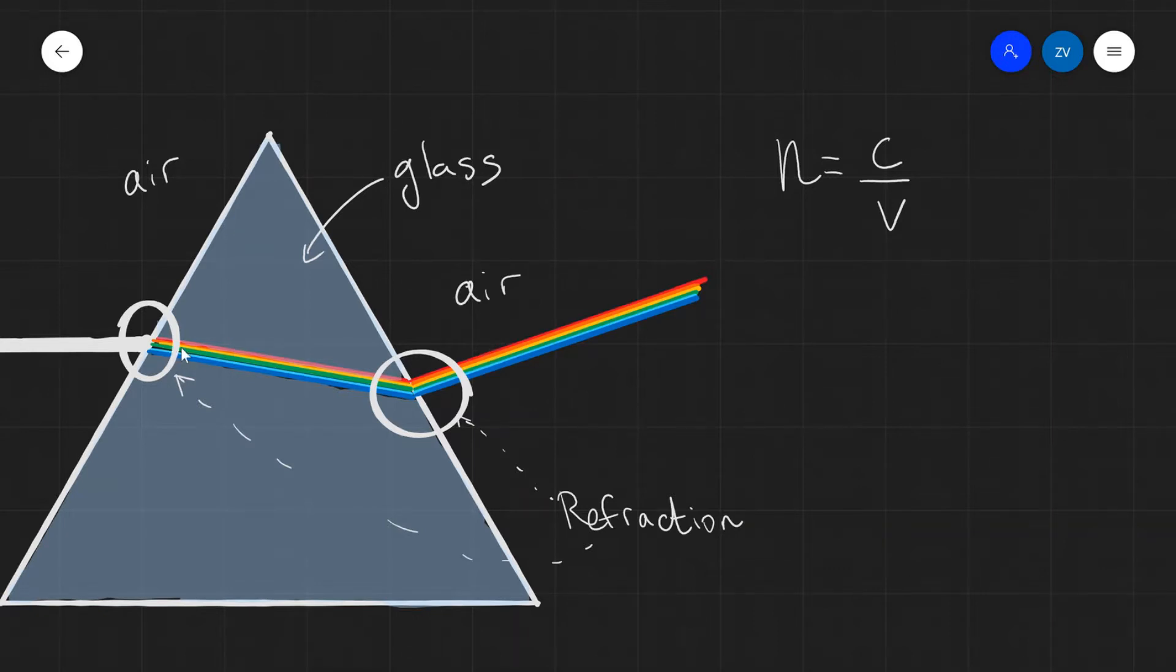The speed of the individual waves will also change and this is governed by the refractive index equation n is equal to c over v. Just rearranging for the velocity of the wave in a particular medium, we can see that it will be equal to c, which is the speed of light in a vacuum, divided by the refractive index. Because the refractive index of all substances is greater than one, this would mean that the speed of light will be slowing down in general as it enters a medium of higher optical density.